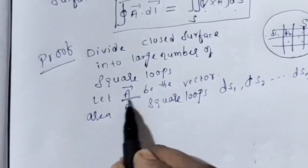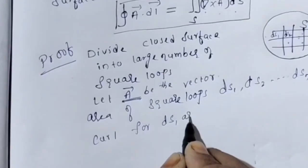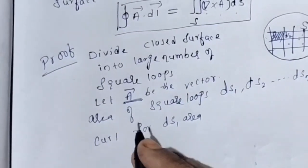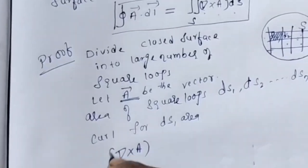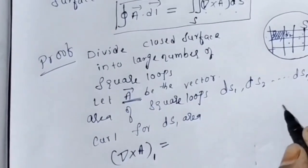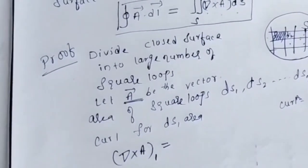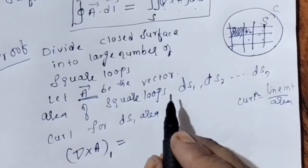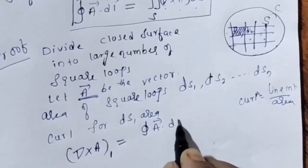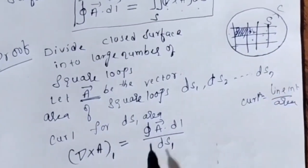If A is the vector, let us write the curl for the dS1 area. The other definition of curl is nothing but line integral per unit area. So, line integral of vector A is A dot dL, and the unit area is the area of that first square loop, which is dS1.